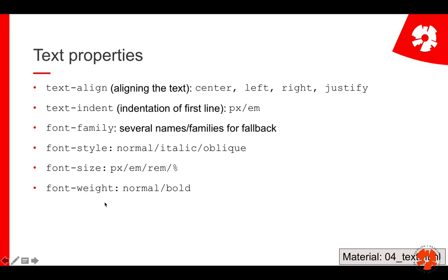They're all fairly straightforward. You have text-align, which simply gives you the alignment — whether the text is centered, left, right, or justified. The indent is how the first line of a paragraph or of a block is indented. So for example, if you declare it with 10 pixels, then there is a 10-pixel indentation.